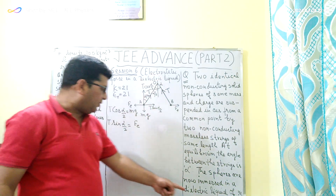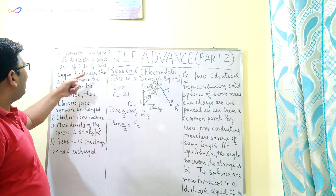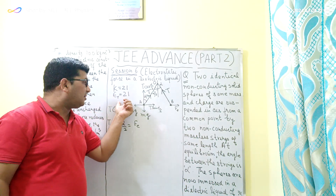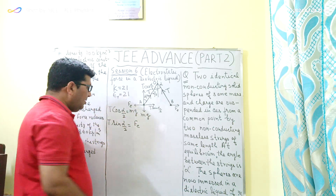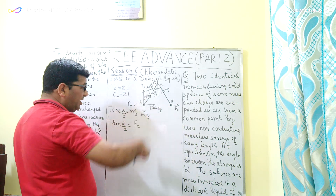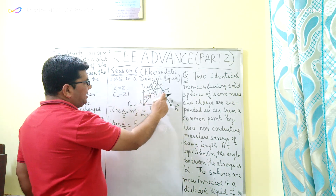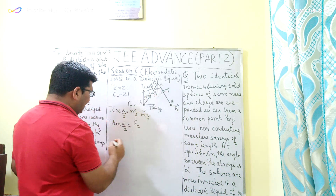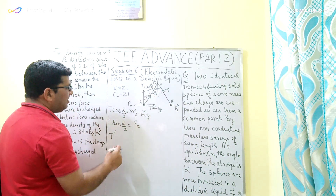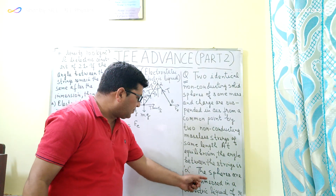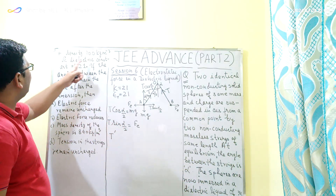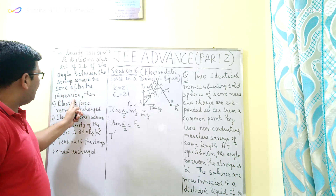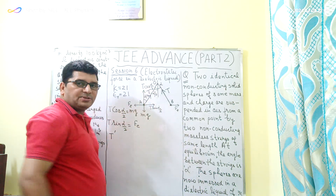Now this entire system is immersed in a liquid of density 800 kg per cubic meter and dielectric constant k = 21, that is the relative permittivity of that medium is equal to 21. In the second case, when it is immersed in the liquid, the tension in the string will change, so I am taking the tension as T dash. Note that the angle between the strings remains the same after immersion.